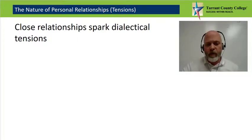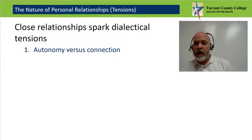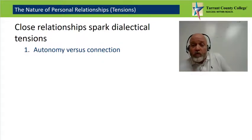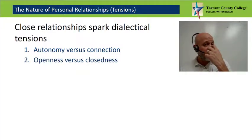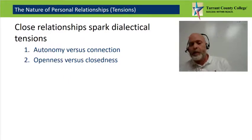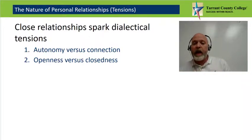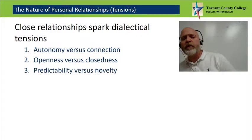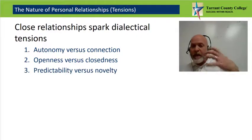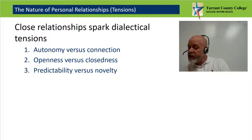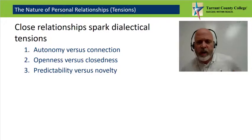Dialectical tensions are typically measured in three dimensions. The first is autonomy versus connection — the tension between wanting to be one's own person and the desire to be close to others. The second is openness versus closedness — a desire for disclosure and honesty versus the desire to keep certain facts, thoughts, or ideas to oneself. The final dimension is predictability versus novelty — the desire for consistency and stability versus the desire for something fresh and exciting.